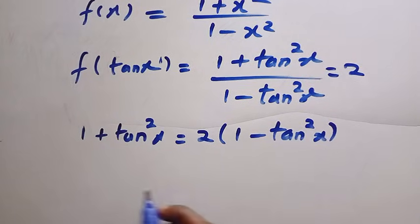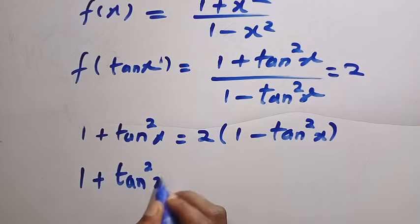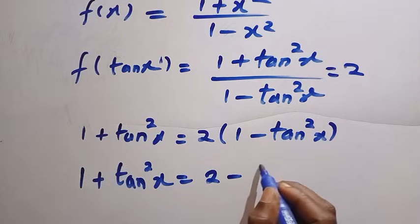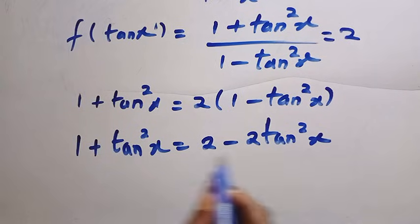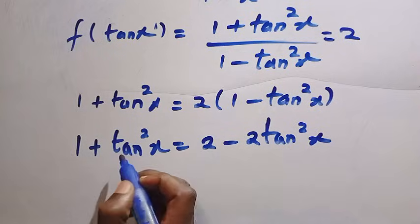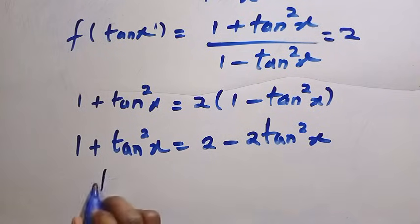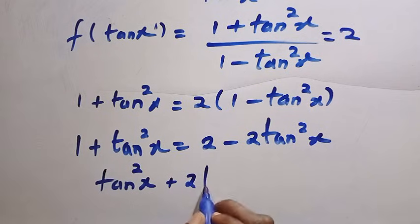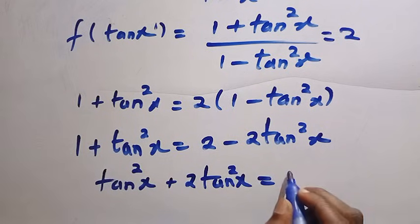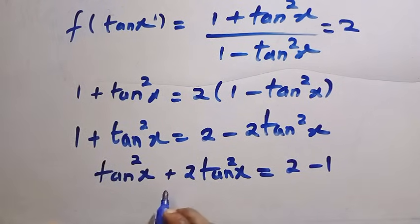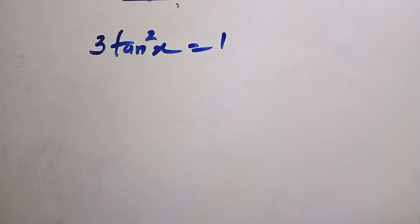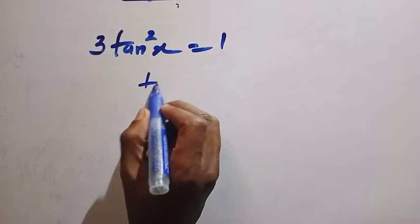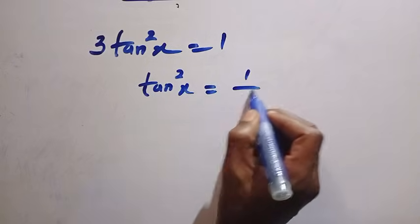By opening the parentheses, we have 1 + tan²x = 2 − 2tan²x. By collecting like terms, we move the tan²x terms together and the constants together, giving us tan²x + 2tan²x = 2 − 1, so 3tan²x = 1. Dividing both sides by 3, we have tan²x = 1/3.